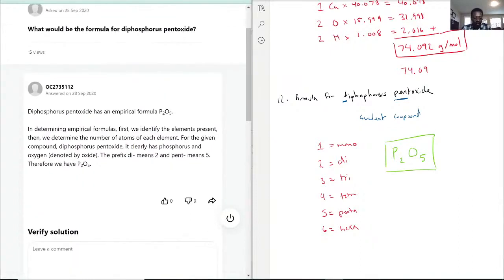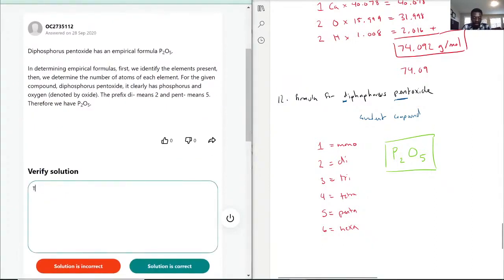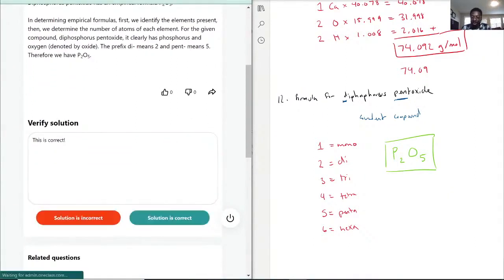And exactly, they talk about how di means two, pent means five. If you want to take a quick picture of this, you definitely can, as I give this a comment saying this is correct. Okay, and we move on to question 13.